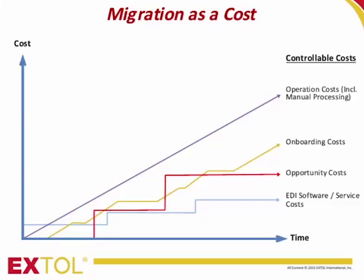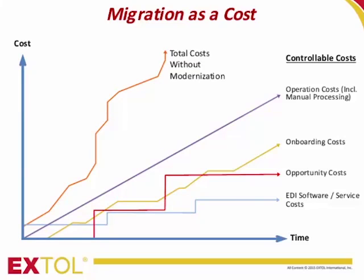The fourth component is opportunity costs. This mostly refers to lost revenue opportunities due to missing capabilities or capacity, but it can also include lost cost-saving opportunities due to resource or budget misallocations. Except for opportunity costs, which are difficult to calculate an average of, the cost curves shown here are characteristic of what we find in most businesses. If you add all of these cost elements together, you end up with a total cost curve.